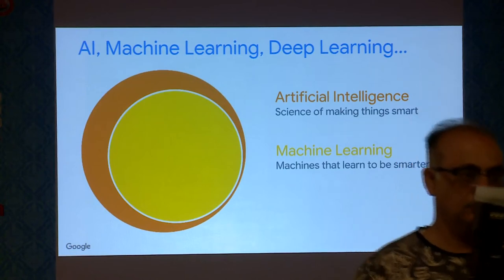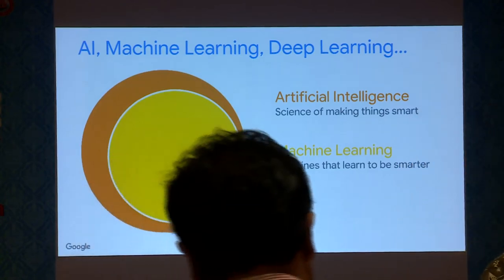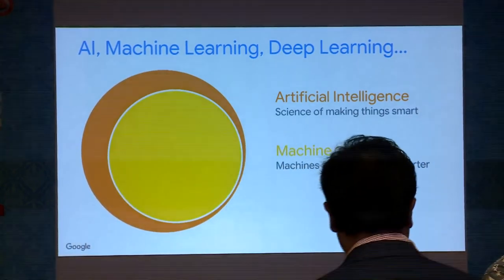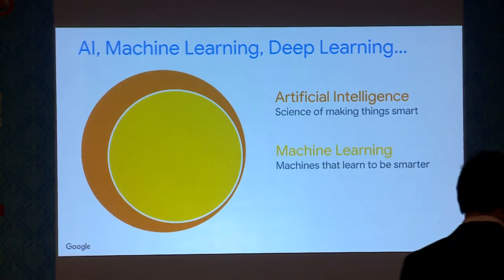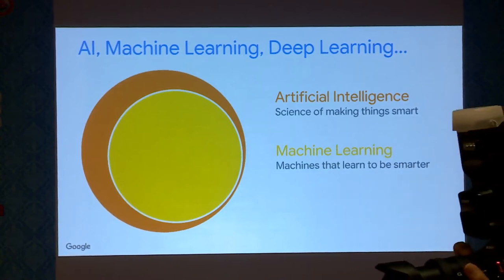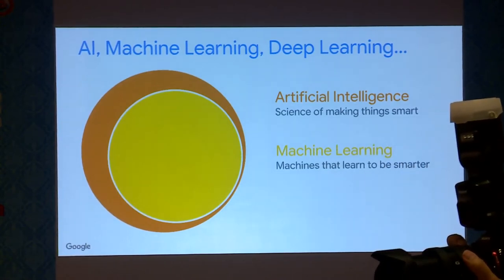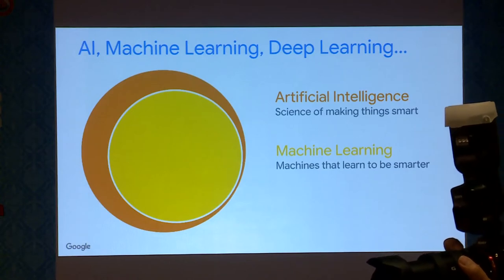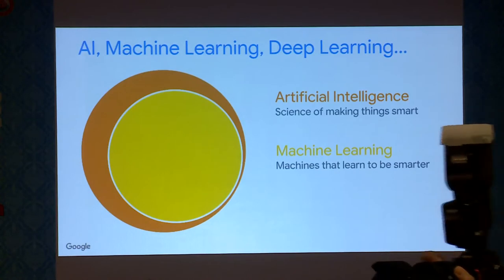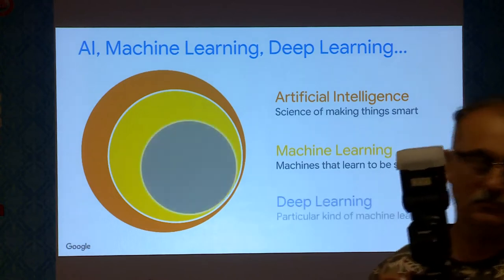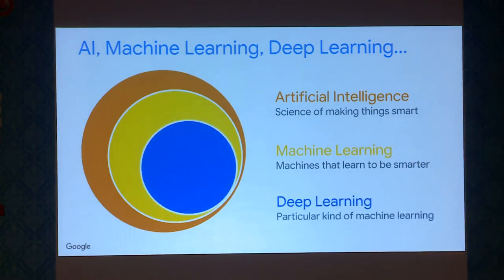In a machine learning system, we show thousands of cat images and thousands of dog images, and after that the system can tell cats and dogs apart. One implementation of machine learning is deep learning, which has shown to be very useful and powerful in the last five to six years and has been the best performing model in many fields.